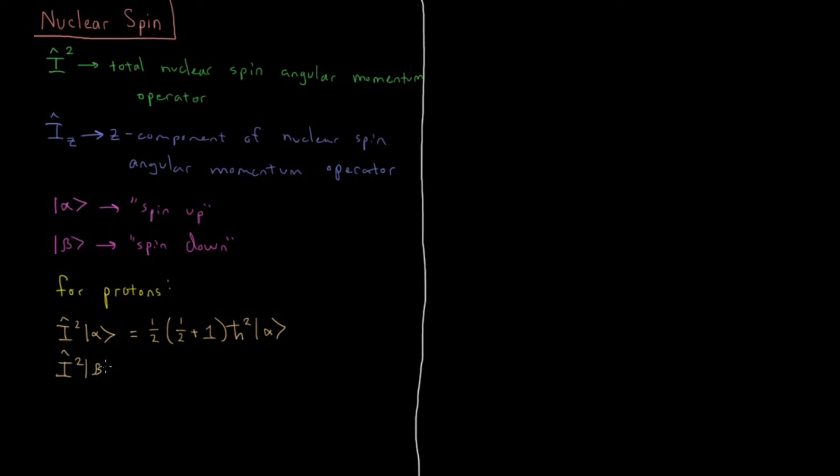I squared has the same eigenvalue for beta: 1/2 times 1/2 plus 1 h bar squared beta.